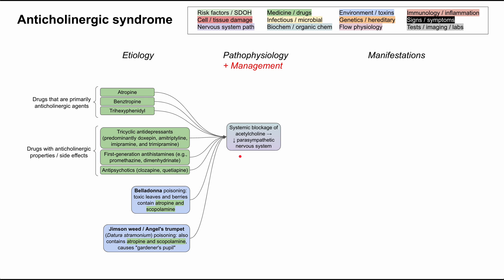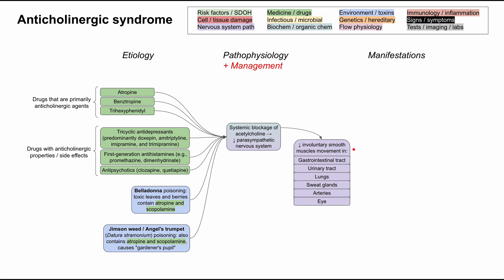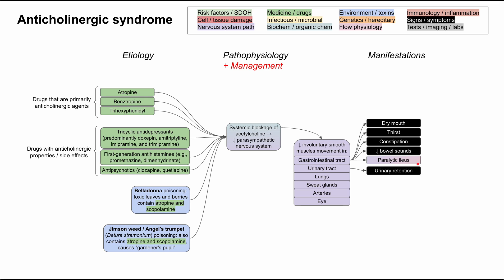There are many manifestations across many organ systems, many related to decreased involuntary smooth muscle movement from anticholinergic syndrome. From the GI tract, we have dry mouth, thirst, constipation, and decreased bowel sounds, which can lead to paralytic ileus. If you're no longer doing peristalsis in the GI tract, you're going to get backed up and develop an ileus.